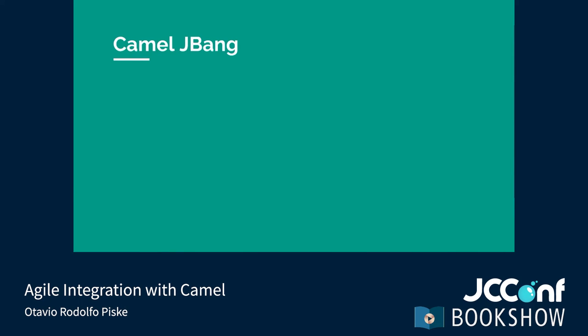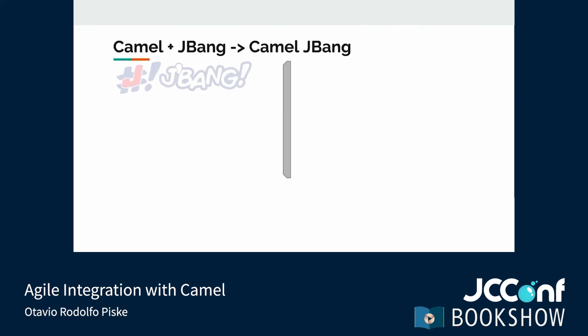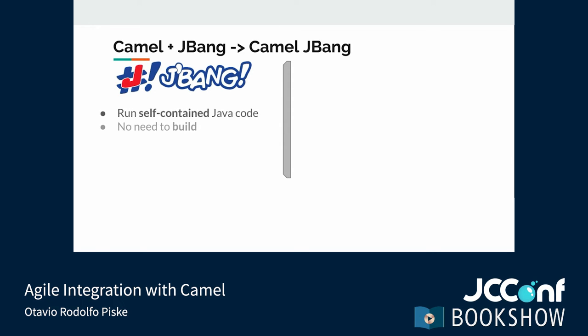Before we start, let's talk about the JBang part of CamelJBang. JBang is a tool that allows us to run self-contained Java code — we can write a Java program, usually in a single file, without dependencies and configurations, and JBang takes care of the rest. There is no need to build or package the application. JBang works with an app model that simplifies installing and removing applications, and it also removes the need for managing our own JVM instance.